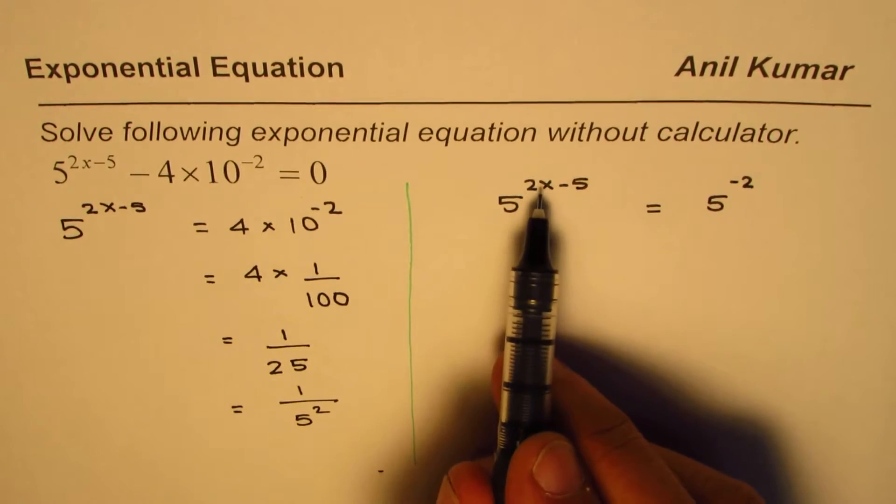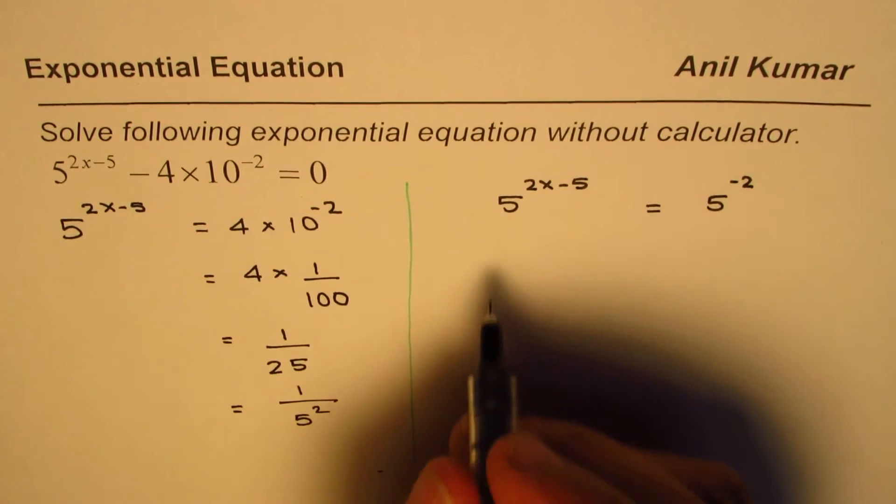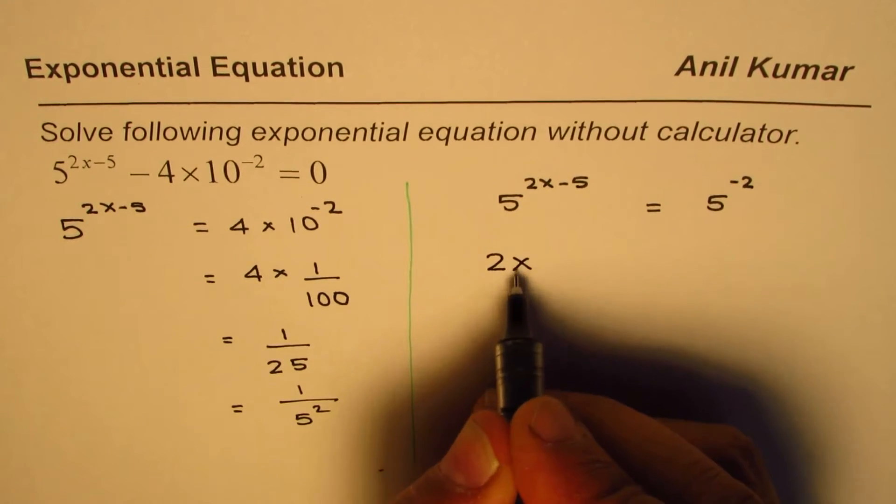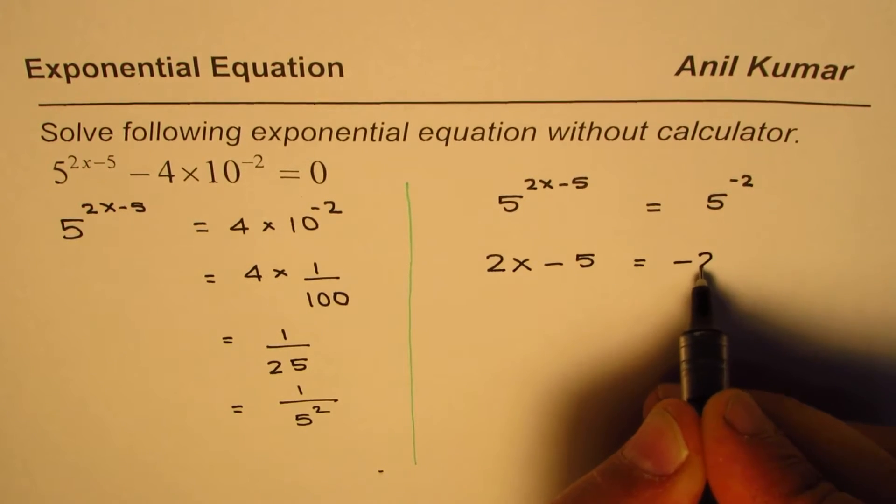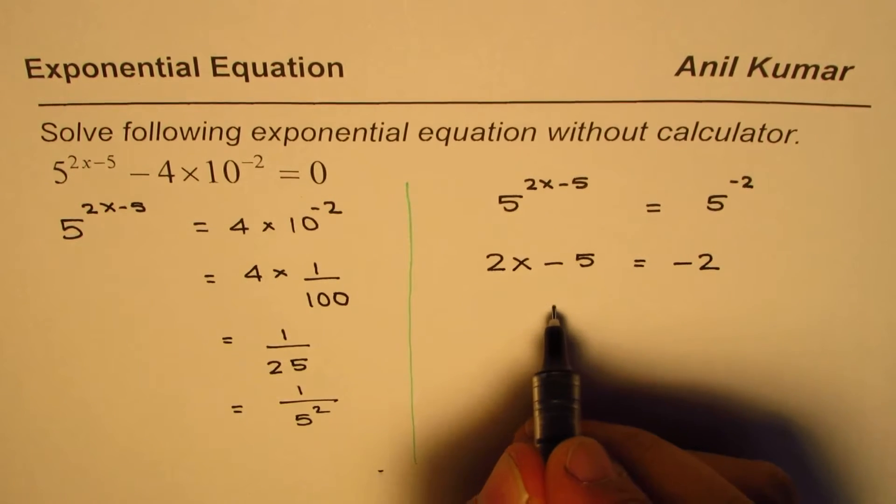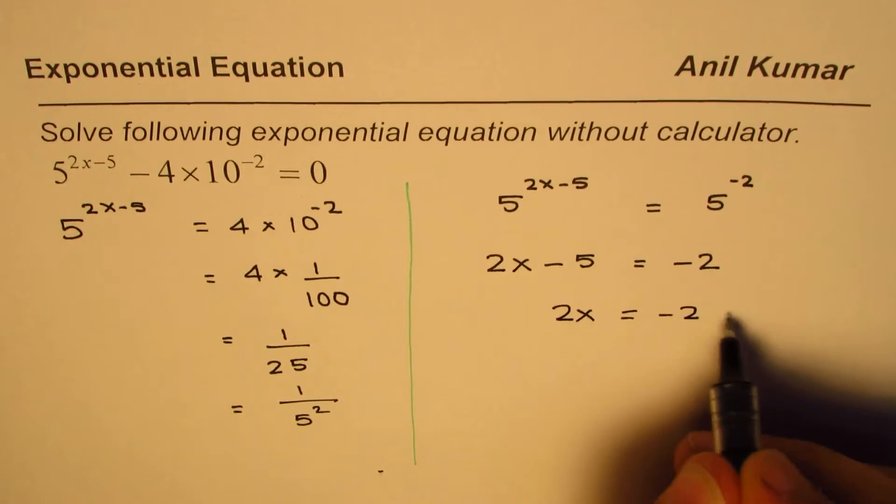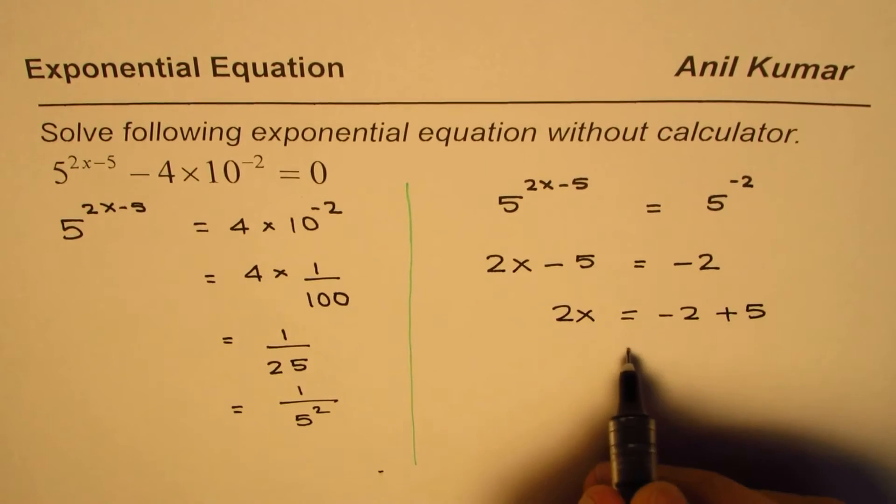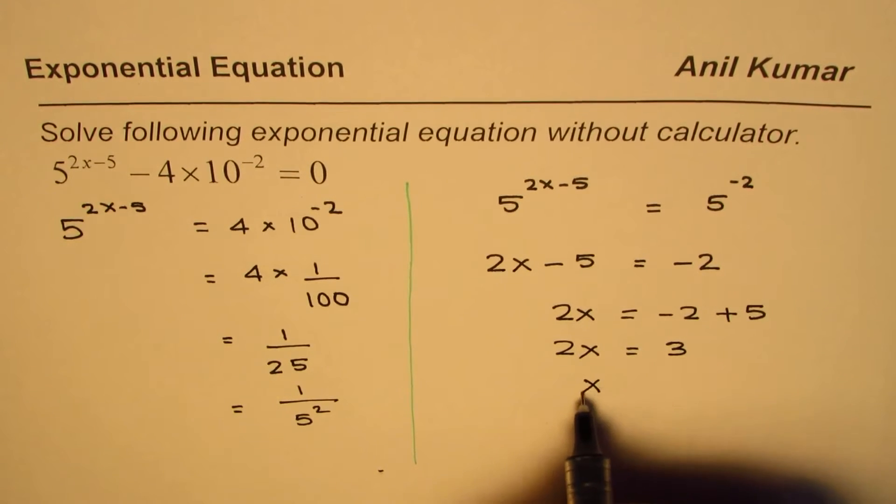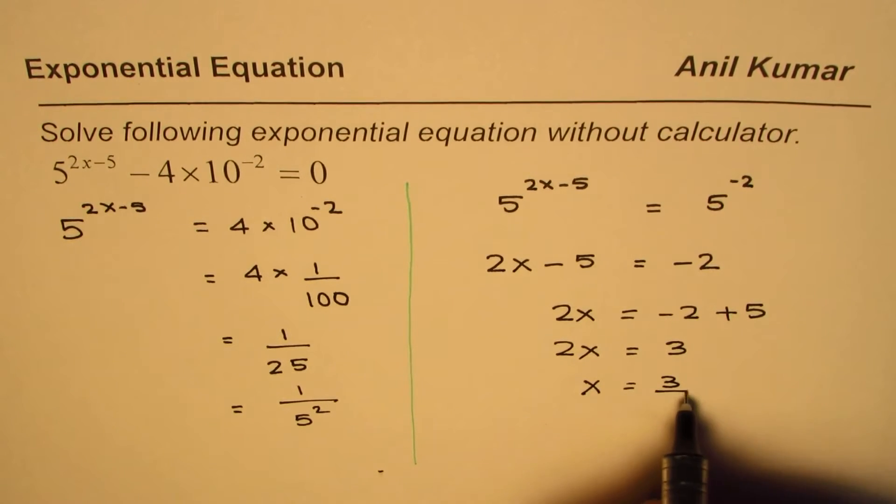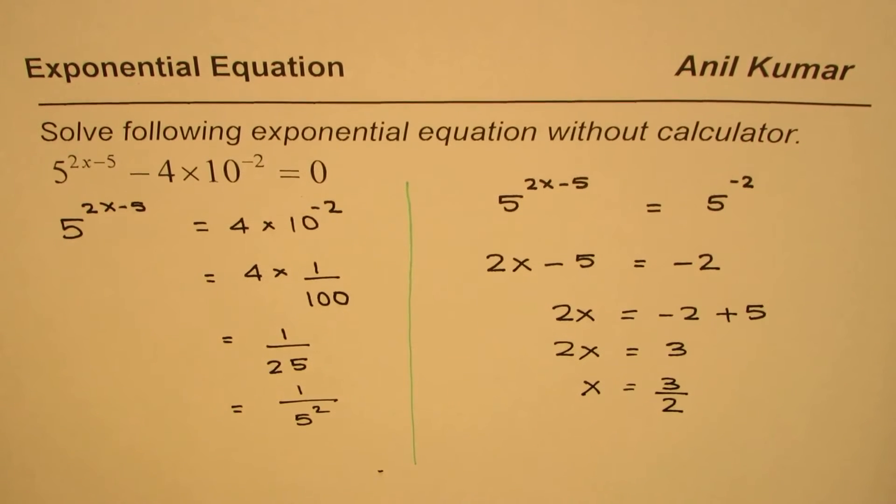Rearranging, we have 2x = -2 + 5, which is indeed 3. So we have 2x = 3, or x = 3/2. That is how you can actually solve such an equation. So the idea is, if you are not using a calculator and you need to solve an exponential equation,